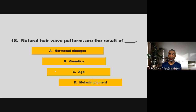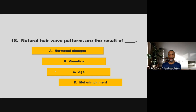Natural hair wave patterns are the result of blank. Is it hormonal changes, genetics, age, or melanin pigment? If you chose B, genetics, you are correct.